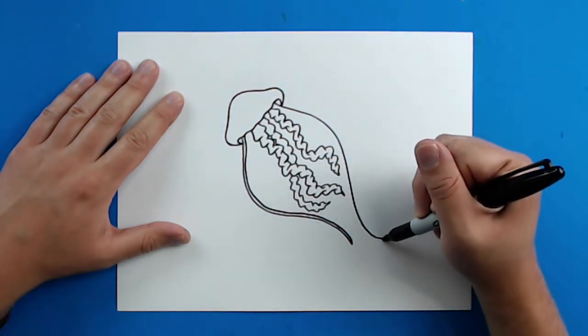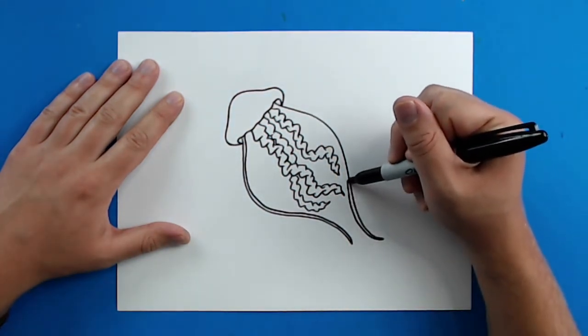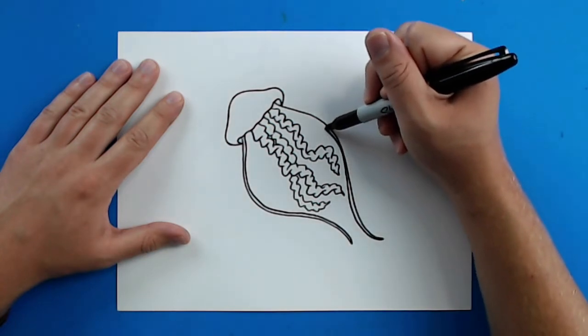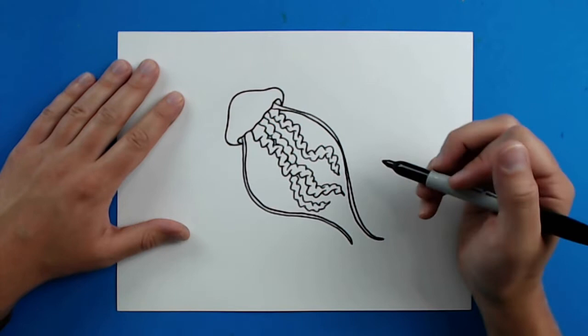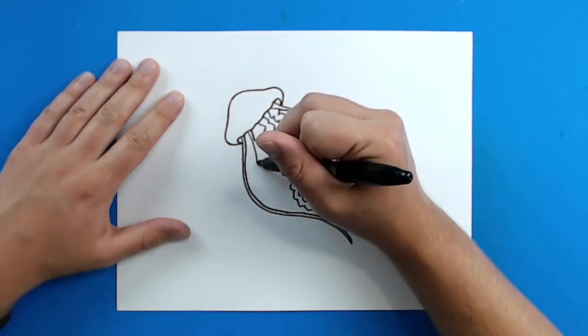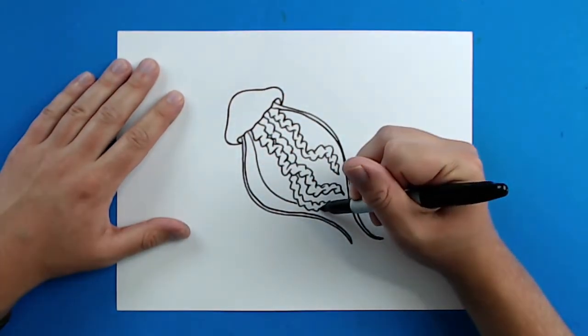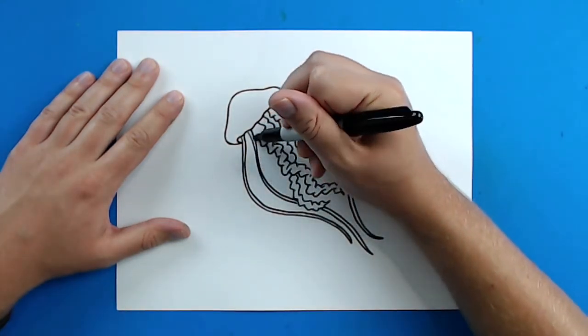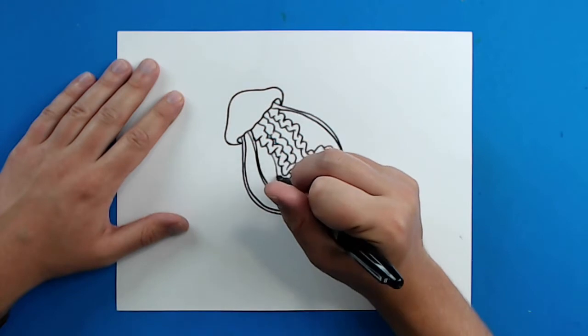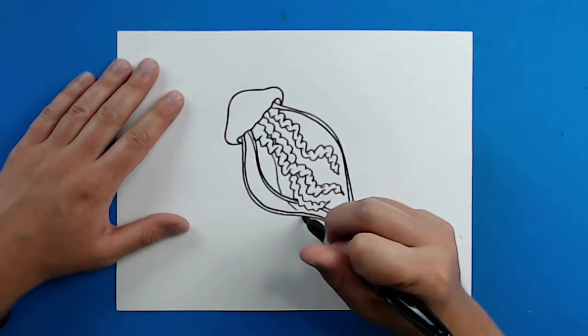Then I'm just going to draw some more. You want these to be kind of all different sizes. It wouldn't look right if they were all the same. The trick is just kind of keep them really skinny. Make them go in different directions too. You don't want these to all be going the same way, because that's not how the tentacles of a jellyfish go.